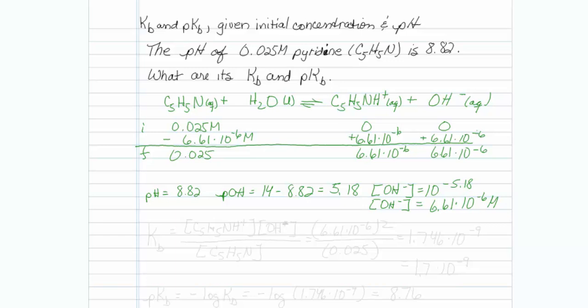Now let me find the kB. My kB is of course going to be equal to my protonated acid concentration times hydroxide all over my original starting base.